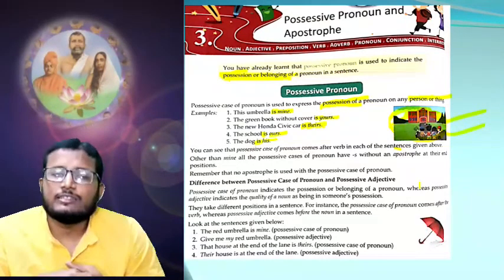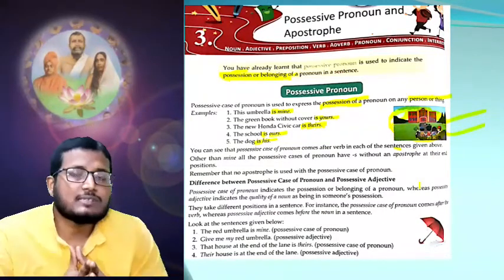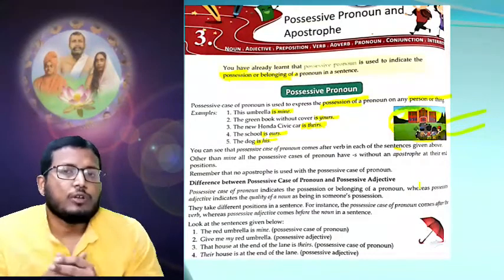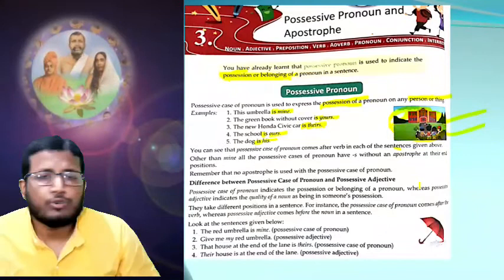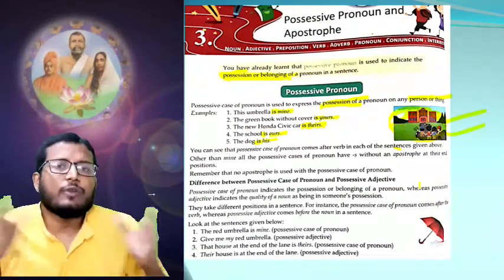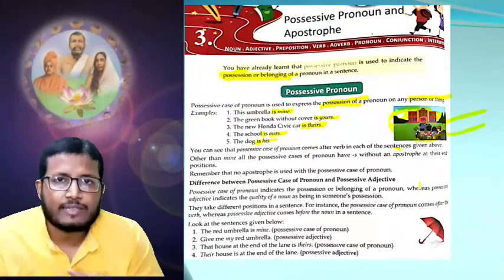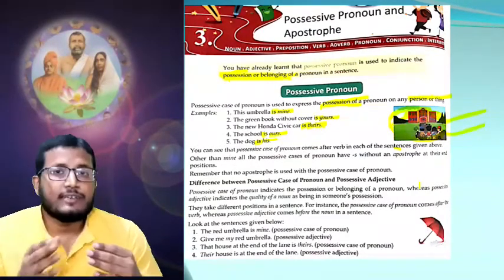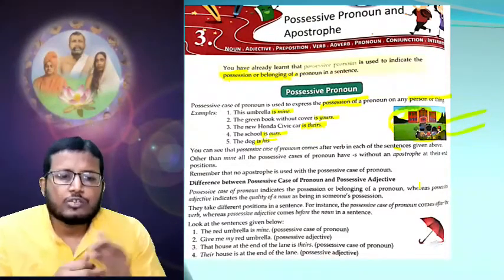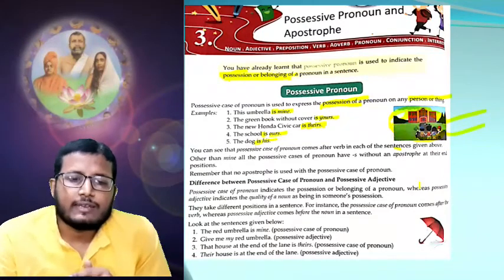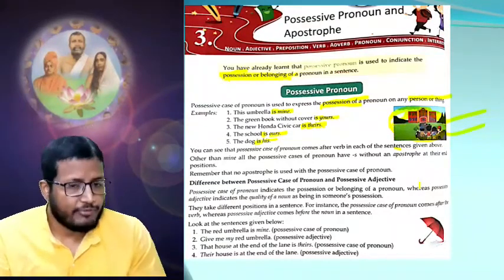Before defining possessive pronoun and possessive adjective, what is adjective? We discussed this in the introductory class. Adjective is a describing word — it describes quality and quantity. Now: possessive case of pronoun indicates the possession or belonging of a person, as we have already read. Whereas possessive adjective indicates the quality of a noun.